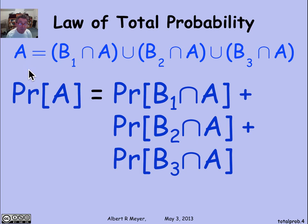And discover that the probability of A is simply the probability of B1 intersection A, B2 intersection A, B3 intersection A.